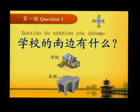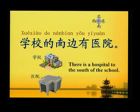第一题 Question one: 学校的南边有什么？ 答案是 — 学校的南边有医院 — There is a hospital to the south of a school.